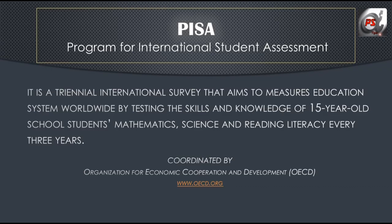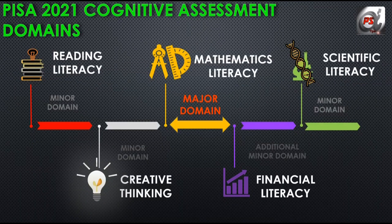Now why PISA? PISA only measures 15-year-old skills because till this age a student completes his basic education. This exam, PISA, will be conducted in two modes: main survey and field trial. Both the modes have the same designing but the sample collection is different. Sample means the type of students or the number of students. PISA is basically based on cognitive assessment — cognitive means how much knowledge we have, how we put our knowledge in our daily routine, and how fast we learn.